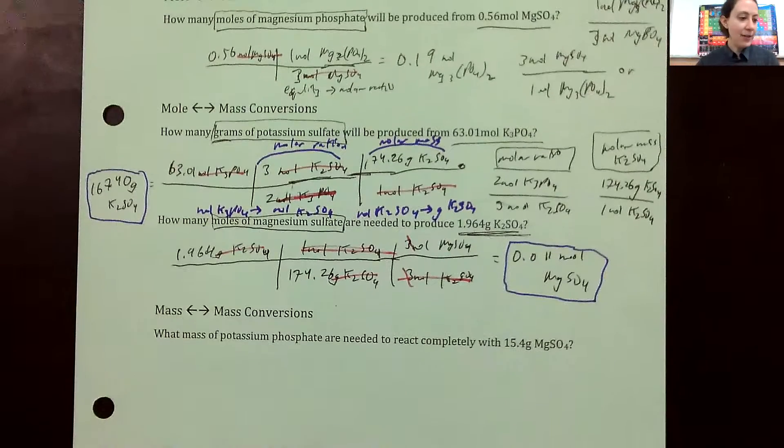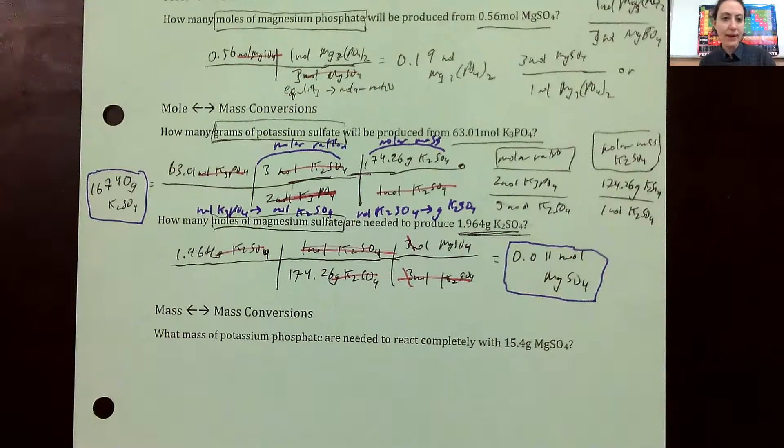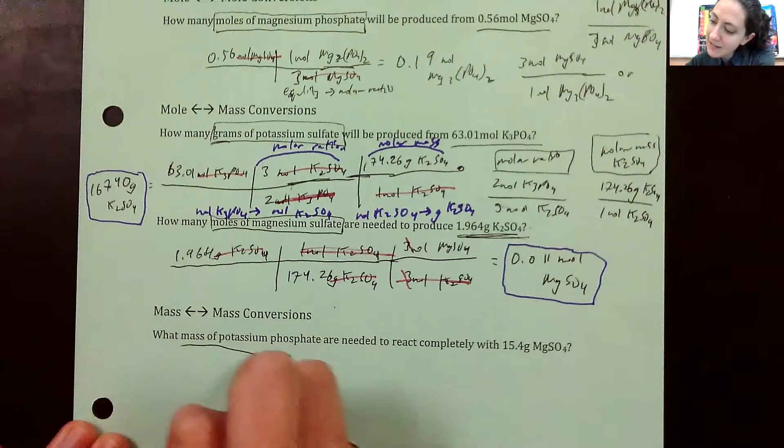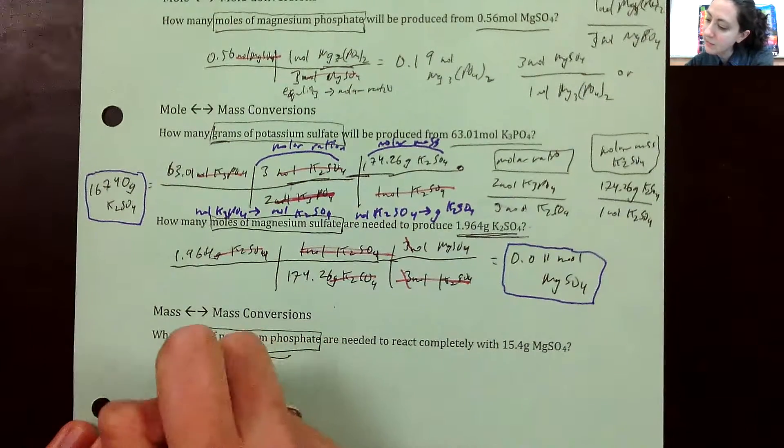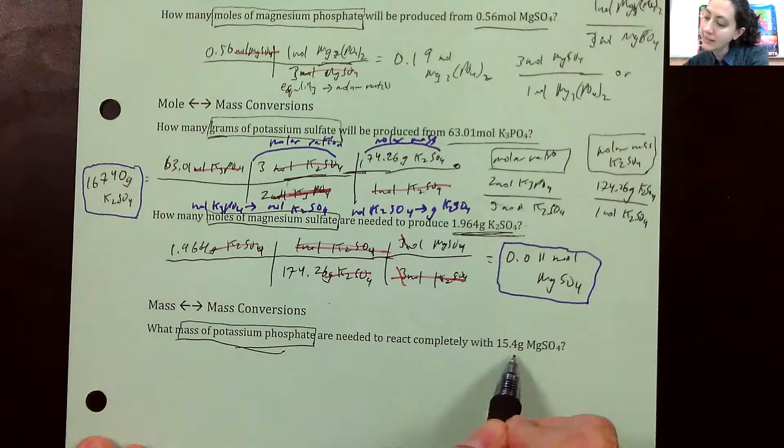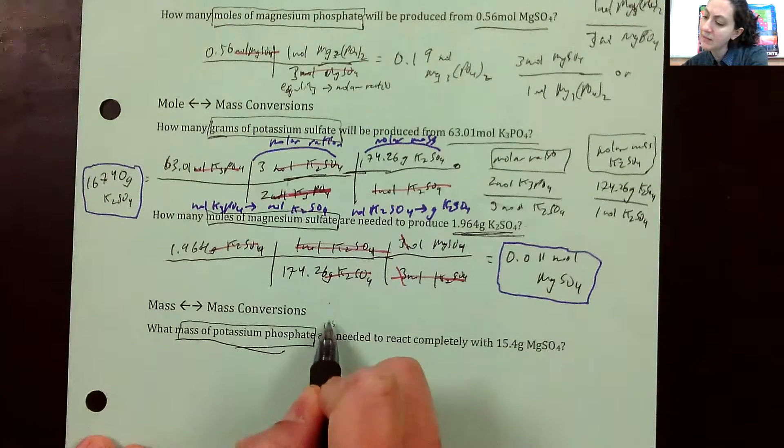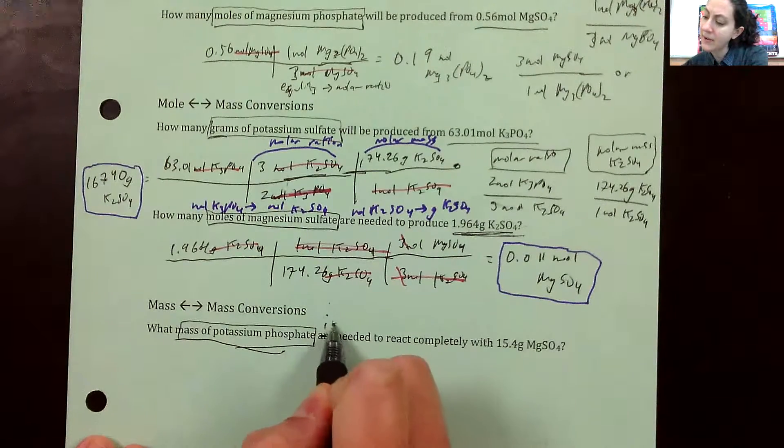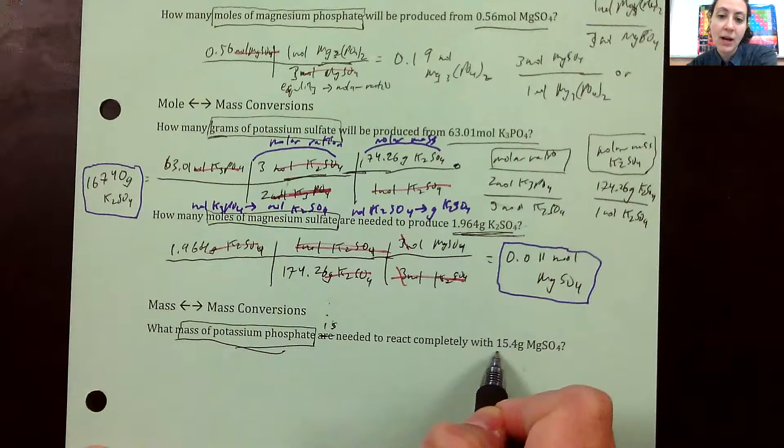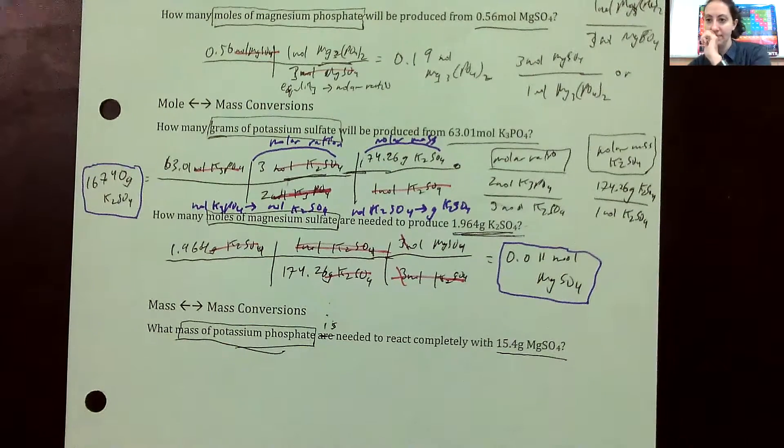So let's dive right into this example. What mass of potassium phosphate is needed to react completely with 15.4 grams of magnesium sulfate?